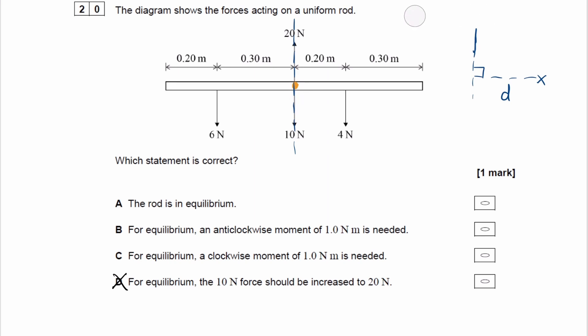Okay, so we want to work out moments. We're doing it about the orange point. The 20 Newton and the 10 Newton force don't have moments about that point. The moment due to the 6 Newton force will just be 6 times 0.3, which is 1.8.